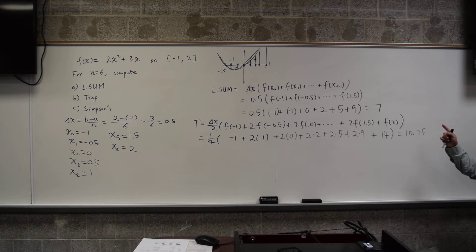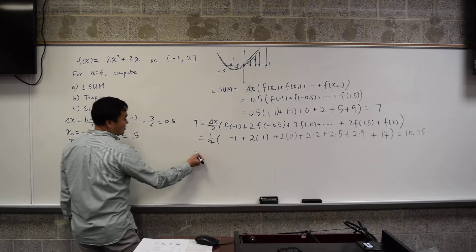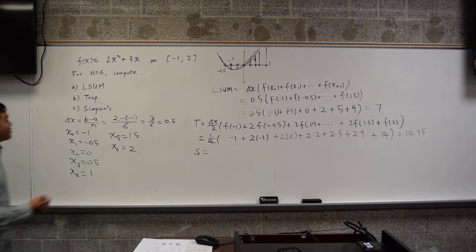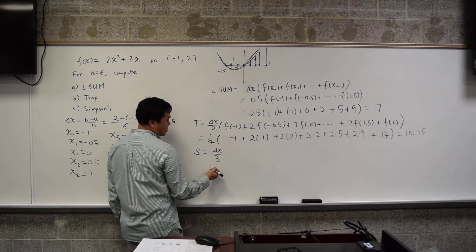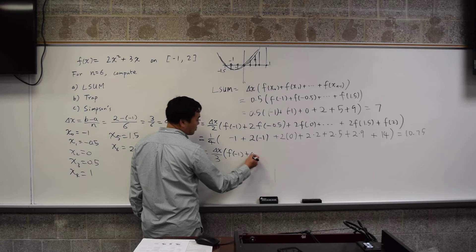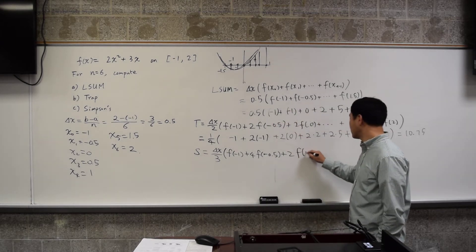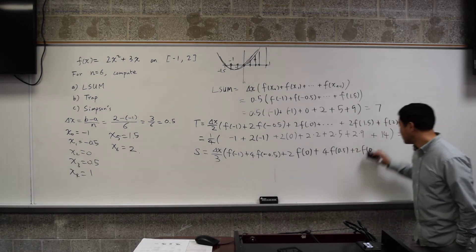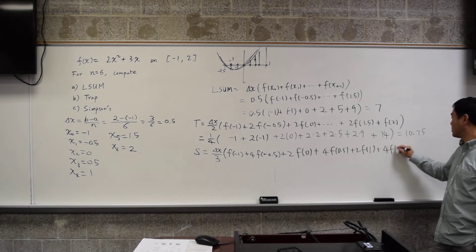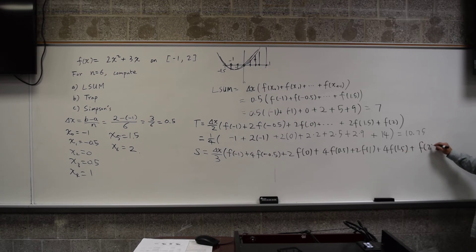One, eleven, twenty-nine, thirty-three, forty-three. So it's pretty close. Close enough, right. All right. S, it's actually not good to say close enough. All right. S is equal to delta x over three, then f of negative one. This time it's four, two, four, two. That's repeated, right? And then the last one is just two.